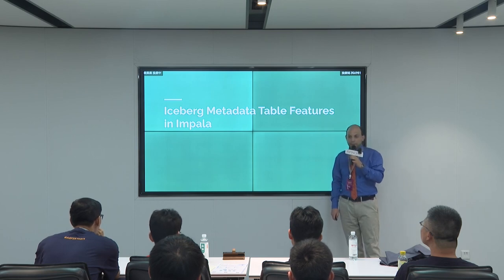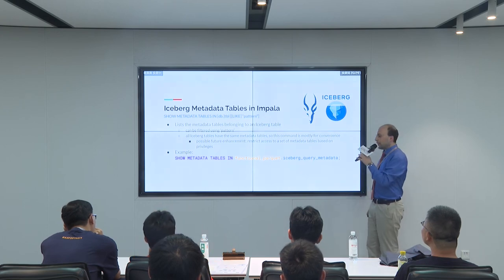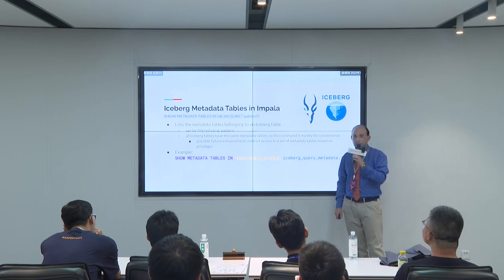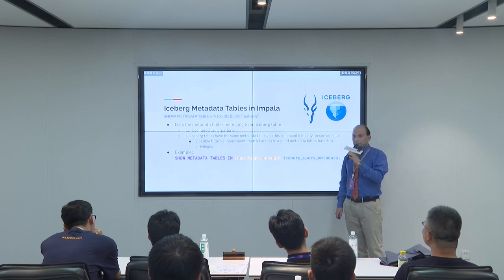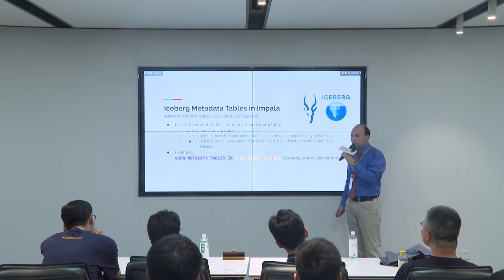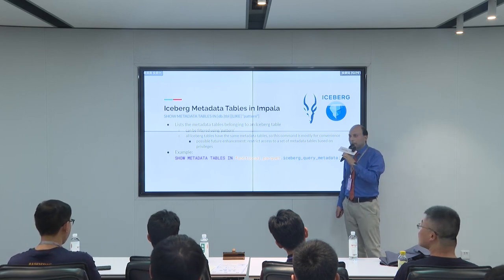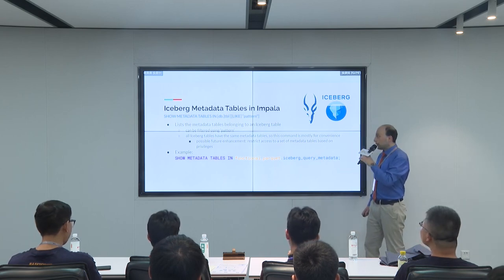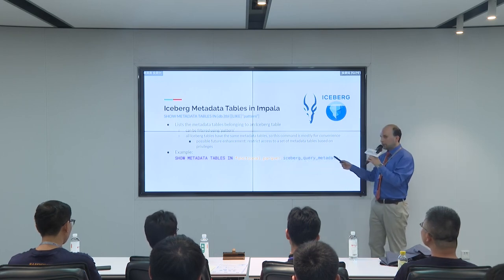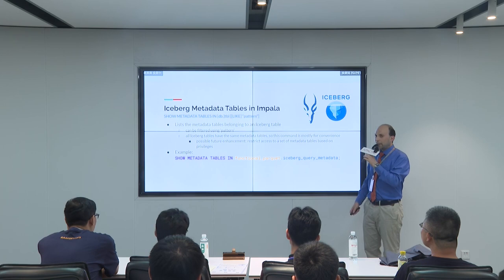The first command you can use is 'show metadata tables', which will list all the metadata tables belonging to a certain table. You can also filter this using a pattern. At present, all Iceberg tables have the same metadata tables, so this command is mostly for convenience. But in the future, it's possible we could enhance it and limit access to some metadata tables based on user privileges. For example: 'SHOW METADATA TABLES IN functional_parquet.impala_query_metadata' lists all the metadata tables.